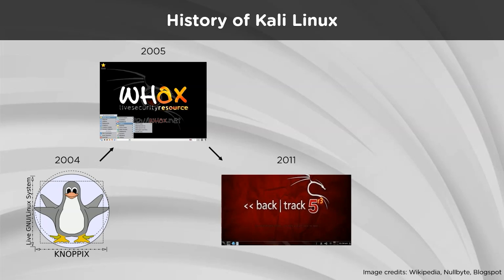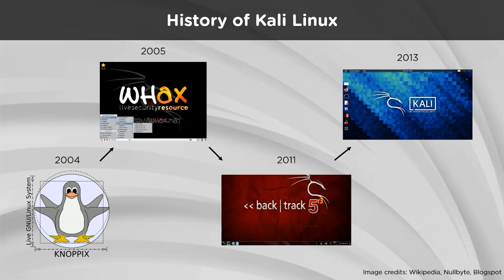Backtrack was based on Slackware from version 1 to version 3, but switched to Ubuntu later on with version 4 to version 5. Using the experience gained from all of this, Kali Linux came after Backtrack in 2013. Kali started off using Debian Stable as the engine under the hood before moving to Debian Testing when Kali Linux became a rolling operating system.